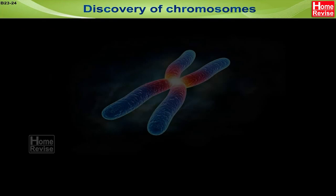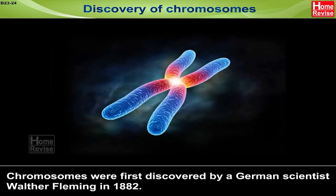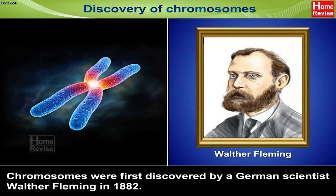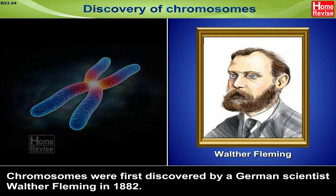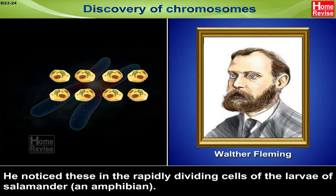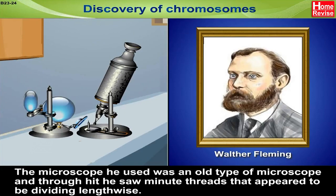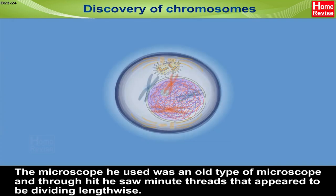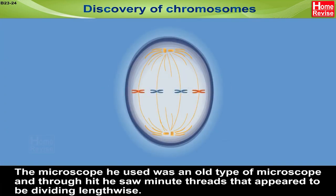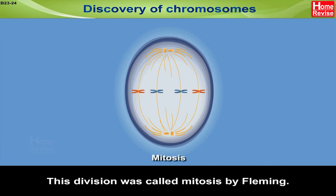Discovery of Chromosomes: Chromosomes were first discovered by a German scientist, Walter Fleming, in 1882. He noticed these in the rapidly dividing cells of the larvae of salamander, an amphibian. The microscope he used was an old type, and through it he saw minute threads that appeared to be dividing lengthwise. This division was called mitosis by Fleming — the term mitosis means thread.